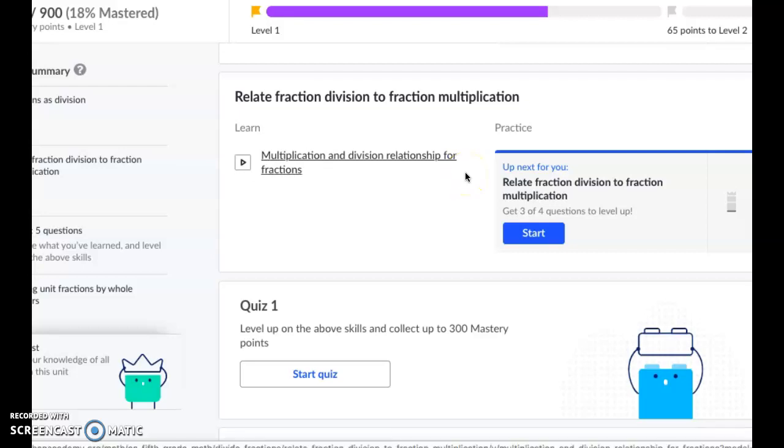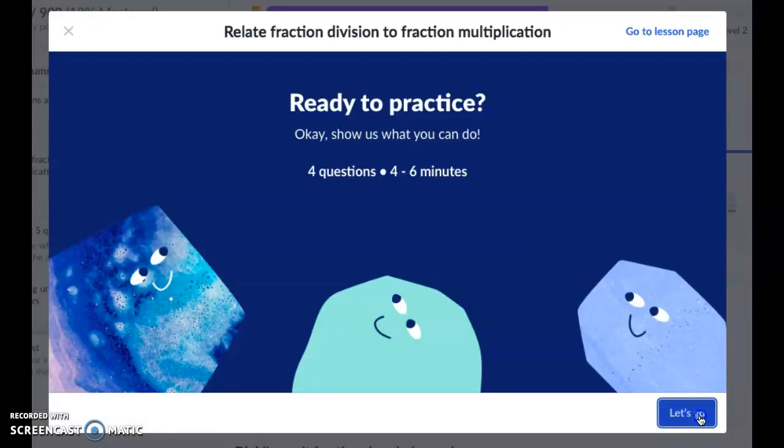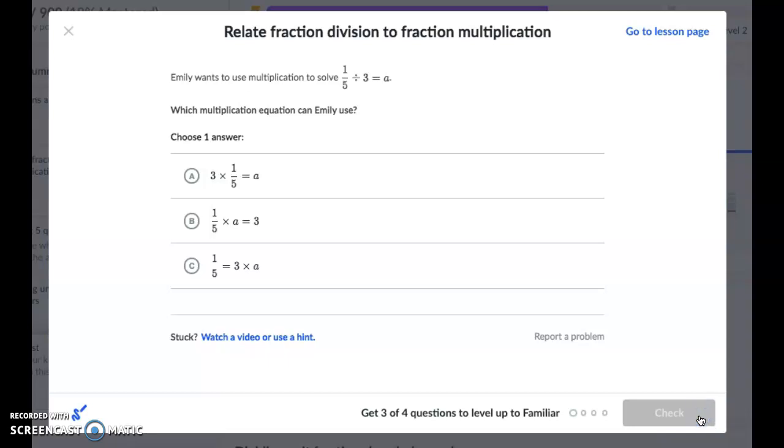Khan Academy divide fractions, working on the subtopic relate fraction division to fraction multiplication. Emily wants to use multiplication to solve one-fifth divided by three equals a. So how can we switch that into multiplication?